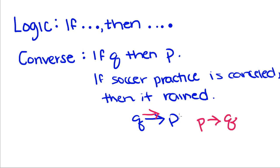If you look at this one, if soccer practice is canceled then it rained, that's assuming that the only time soccer practice is canceled is when it rains. If there's not school, like if there's a snow day or something, soccer practice is going to be canceled too. That's why this statement isn't always true. For certain if-then statements it could be true, but we can't say with certainty that it is true.